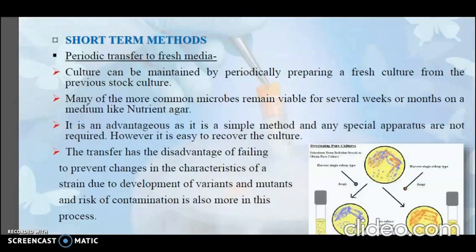The first short-term method is periodic transfer to fresh media. The culture can be maintained by periodically preparing a fresh culture from the previous stock culture. Many common microbes remain viable for several weeks or months on a medium like Nutrient Agar. This is advantageous as it is a simple method requiring no special apparatus, and the culture is easy to recover. However, the transfer has the disadvantage of failing to prevent changes in strain characteristics due to development of variants and mutants, and there is a risk of contamination.